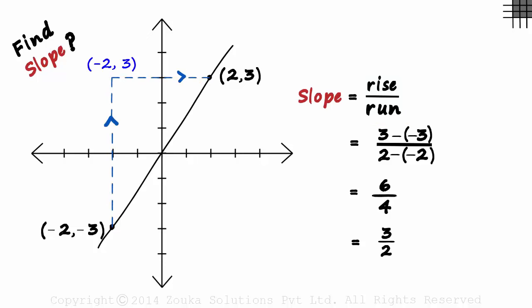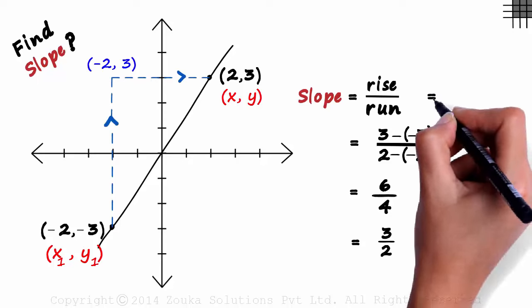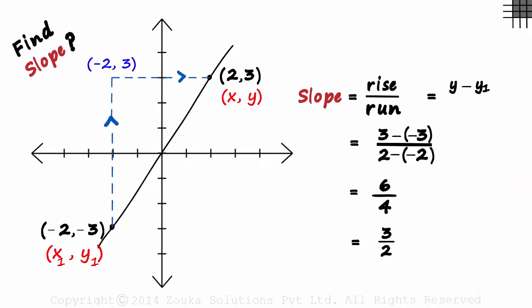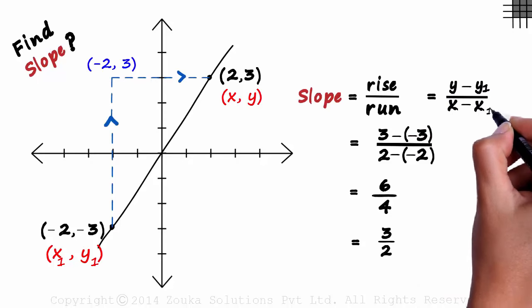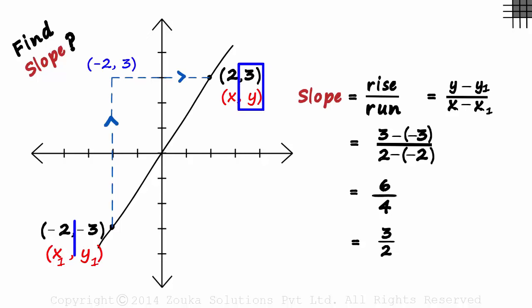If the two points are x comma y and x1 comma y1, then the formula of the slope is y minus y1 over x minus x1. 3 minus minus 3 is actually y minus y1. And 2 minus minus 2 is x minus x1. That's how we calculate the slope of a line.